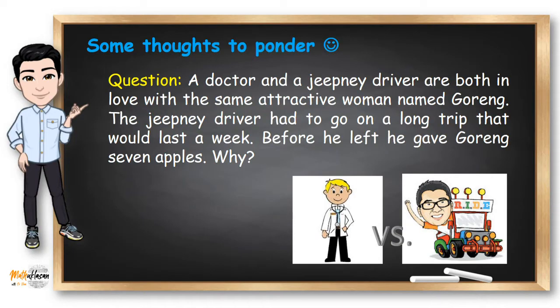A doctor and a jeepney driver are both in love with the same attractive woman named Goreng. The jeepney driver had to go on a long trip that would last a week. Before he left, he gave Goreng seven apples. But why?